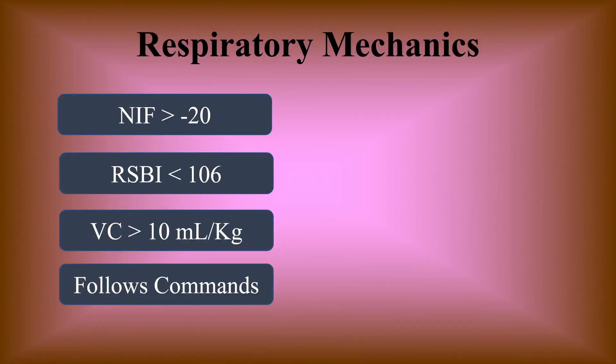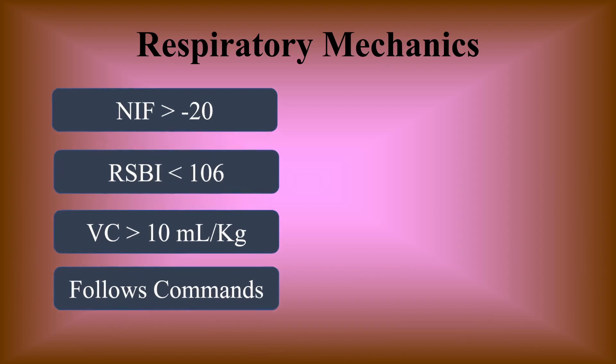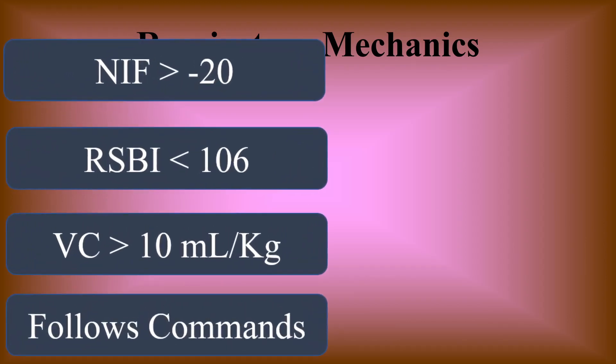After 30 minutes to one hour — whichever is your hospital's policy — you'll do respiratory mechanics. First, the NIF, the negative inspiratory force. You want it to be more negative than negative 20. So negative 20, negative 30, or negative 40 are all acceptable. You don't want negative 10 — that's not enough. You want negative 20 or more negative than that.